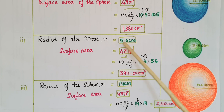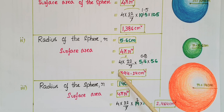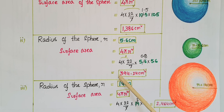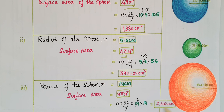So if the radius increases, the surface area also increases. The smallest radius gives the smallest surface area value, and the largest radius gives the largest surface area value.